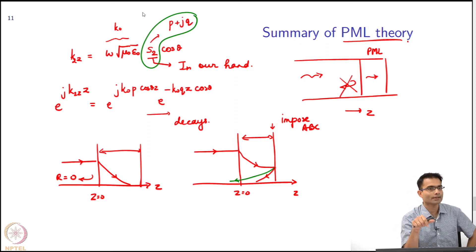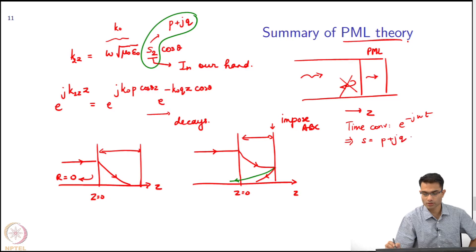One thing I wanted to point out: in this derivation that we did, we assumed a time convention of e to the minus j omega t. This led us to choosing our s of the form p plus j q, because if e to the minus j omega t, the space term has a plus j k x.